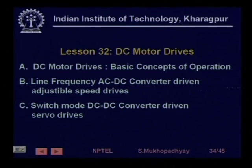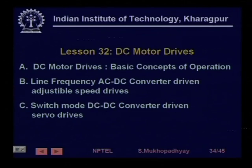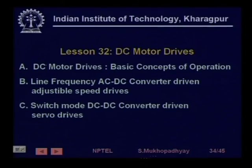Having convinced ourselves about the requirement for variable speed drives, we took a look first at DC motor drives — the most common — and understood the basic concept of operation of DC motors. Then we took two different kinds of DC motor drives: one is a line-frequency AC-DC converter drive (a rectifier) used for adjustable speed drives, and another with a DC-DC converter. Adjustable speed drives differ from servo drives: in adjustable speed drives speed can be changed but generally operated at a particular speed reference for significant amounts of time, while in servo drives the speed continuously keeps changing.